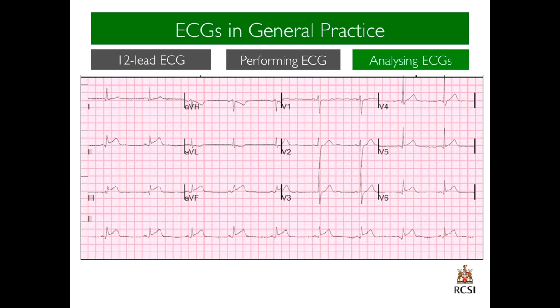It is important to characterise any ischemic changes to certain contiguous leads, which represents certain parts of the myocardium. This 12-lead ECG demonstrates ST-elevation in leads 2, 3, and AVF. So this is an ST-elevation MI in the inferior leads.